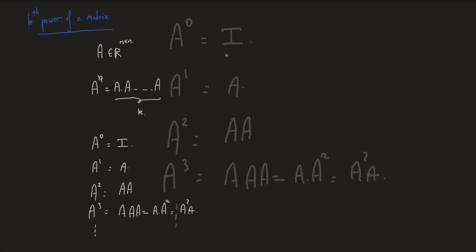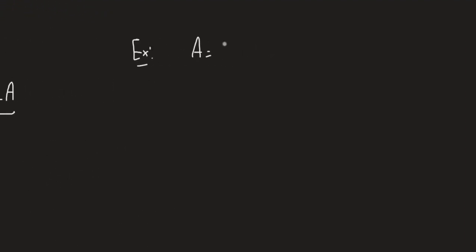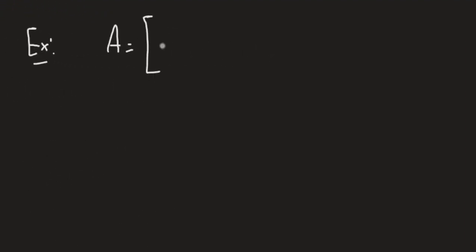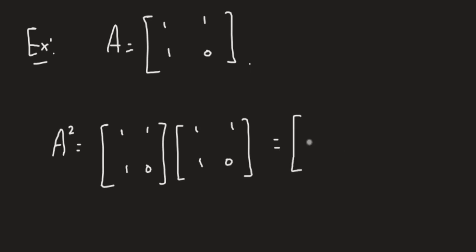Let's give an example. Take the 2×2 matrix A = [1, 1; 1, 0] and compute successive powers. Start with A squared, which is A times A. You get [2, 1; 1, 1].